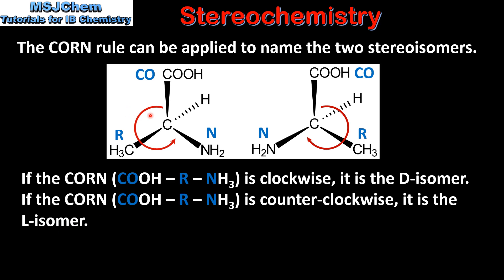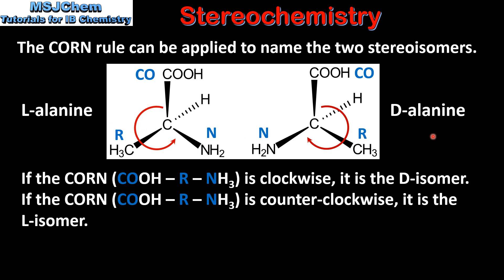So if we look at the isomer on the left, the CORN is spelt counterclockwise therefore it is the D isomer. So the names of these isomers are L alanine on the left and D alanine on the right.